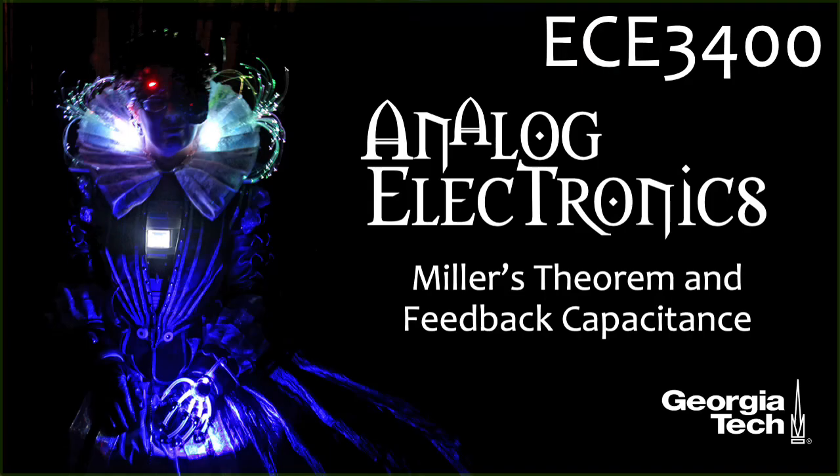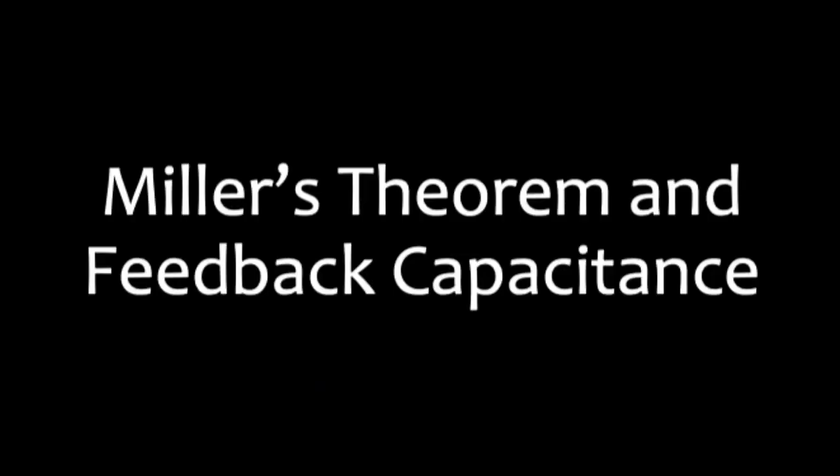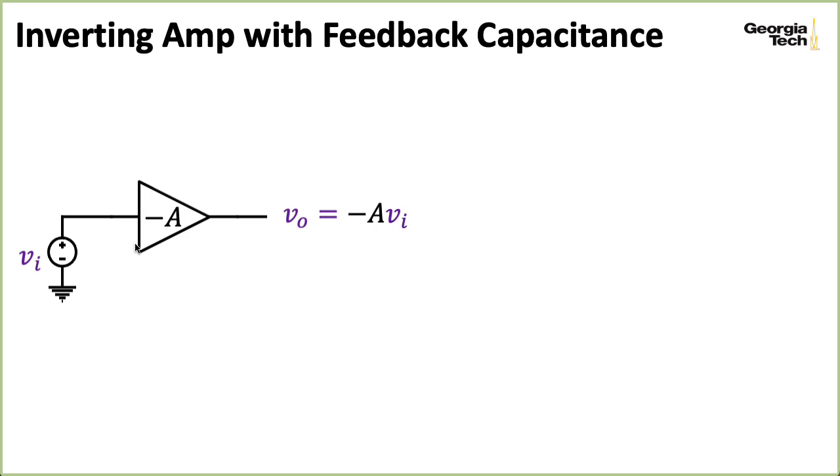In the next lecture, we'll take a look at how capacitance, particularly parasitic capacitance, can affect the high-frequency response of a transistor amplifier, and a useful tool for that is something called Miller's Theorem. So in the setup to Miller's Theorem, we imagine we have some amplifying circuit that has a gain of negative A, where A is a positive number. So this is an inverting amplifier.